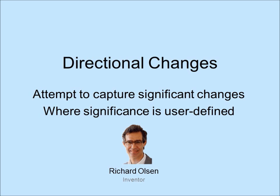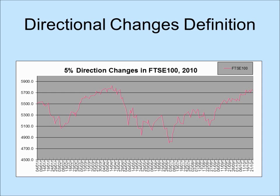This motivated Richard Olsen to invent a new way of summarizing price movements. The new measure should capture significant changes in price movements. It should also be scalable, as what is significant to one observer may not be significant to another. Olsen invented the concept of directional changes.